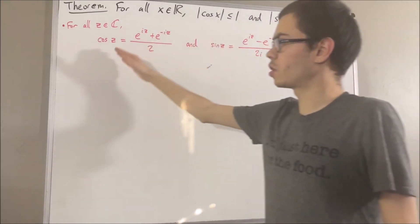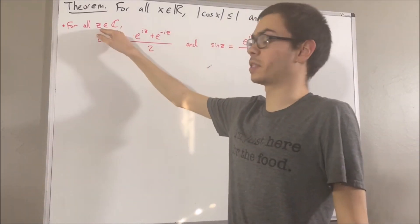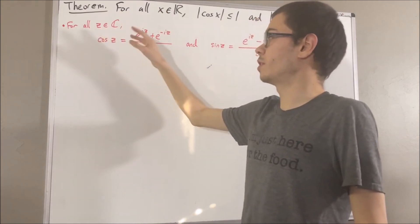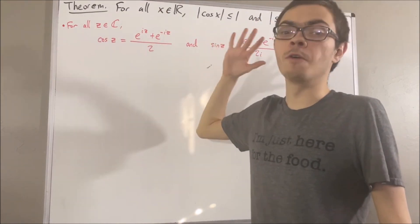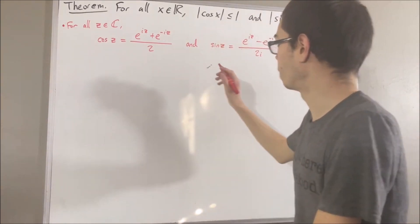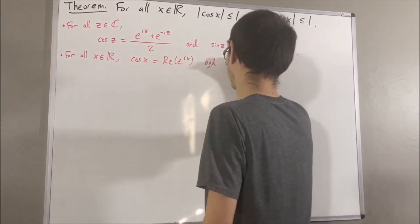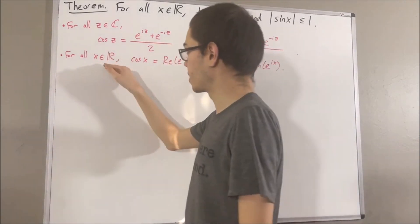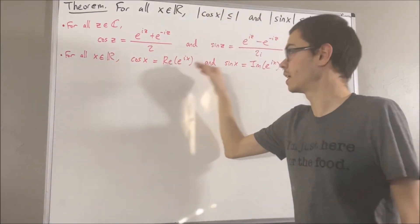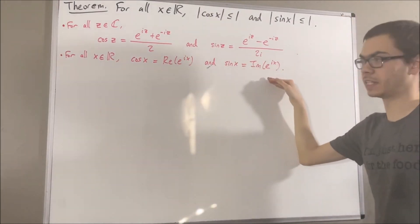Now, this tells us what sine and cosine are over the domain of complex numbers. But we've also seen what sine and cosine are over the domain of real numbers. We've proven the following fact: for all real numbers x, the cosine of x is equal to the real part of e to the ix, and the sine of x is equal to the imaginary part of e to the ix.